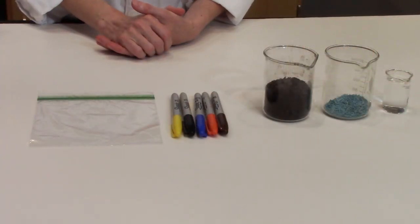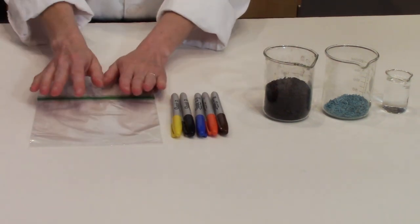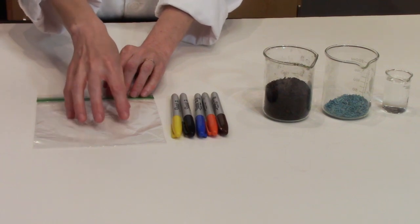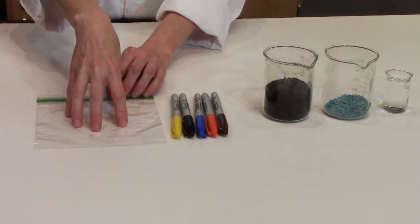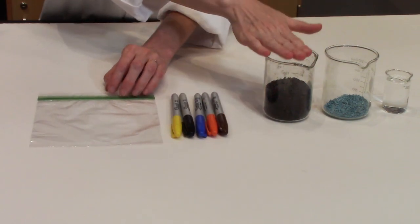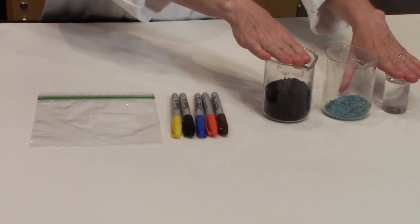The water cycle is difficult to imagine or see because it's so big. So we're going to make a water cycle inside of a bag. Now for this activity, we will need a resealable bag, permanent markers, soil, grass seed, and water.